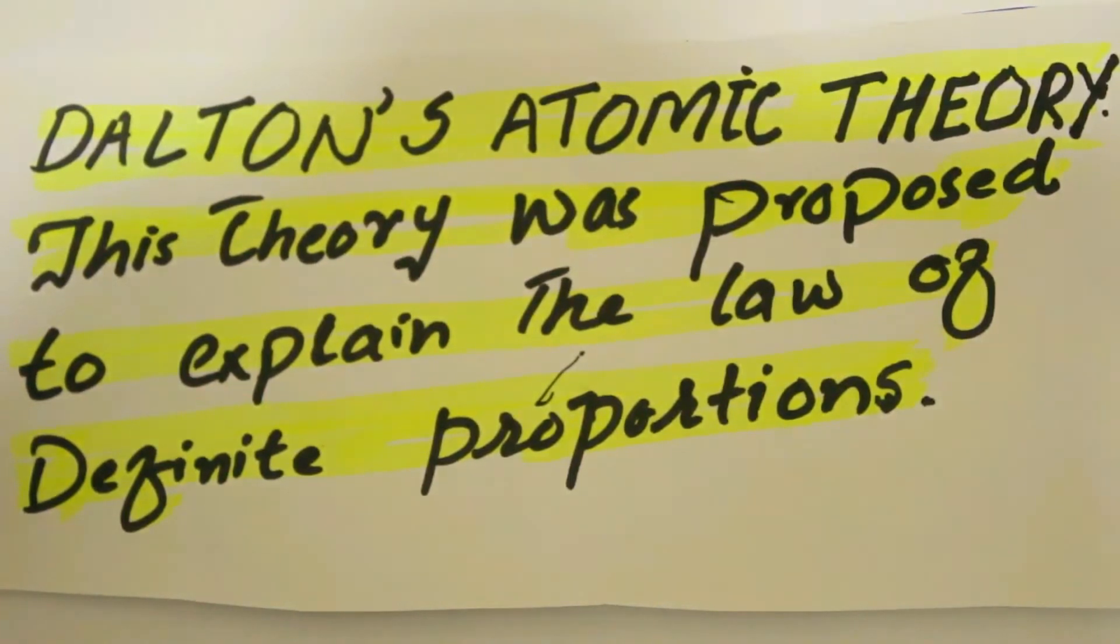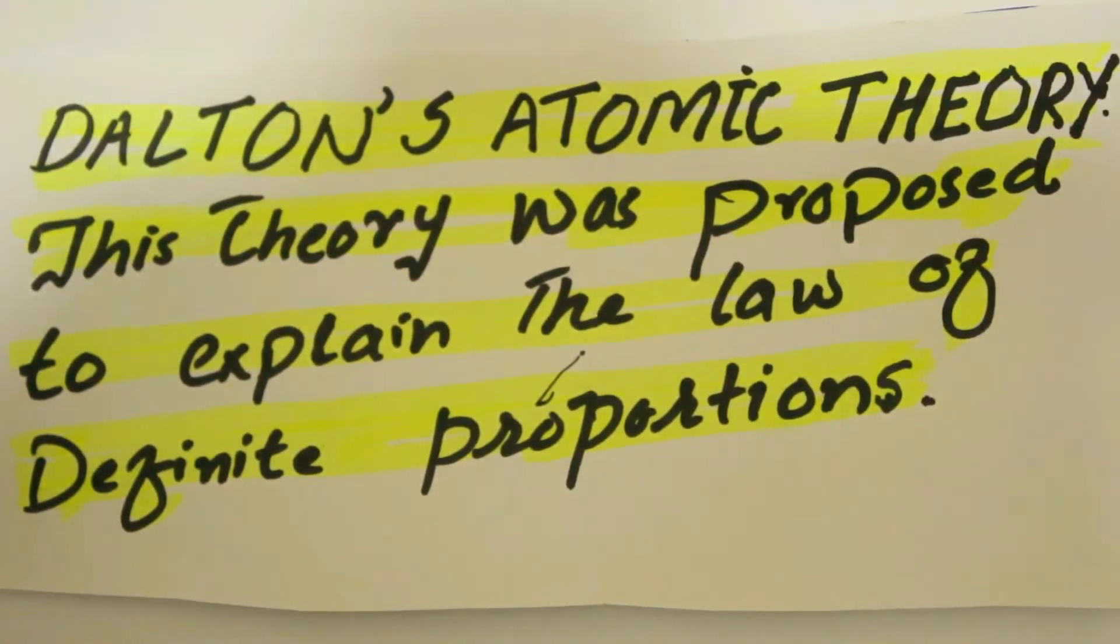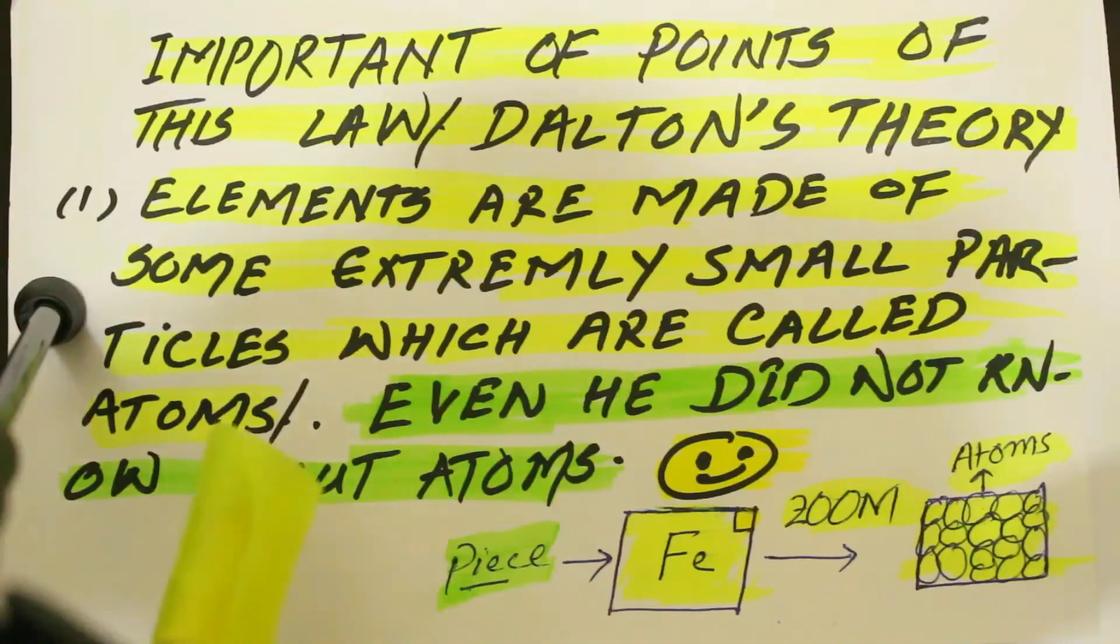The law of definite proportion can be defined as: whenever we take different samples of a pure substance from different places or sources and we find out the atomic mass ratios between the different atoms in each sample, we will find they are exactly the same. This is what we mean by the law of definite proportion, and Dalton's Atomic Theory is a super handy tool to explain both the law of definite proportion and law of mass conservation.